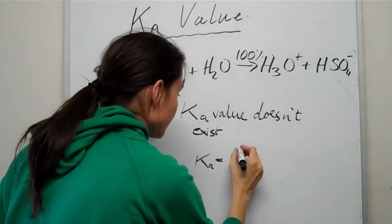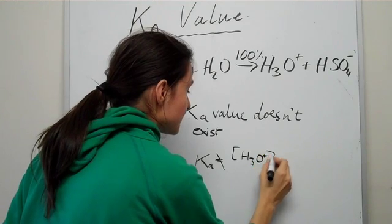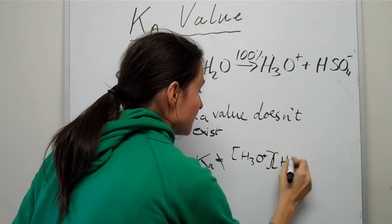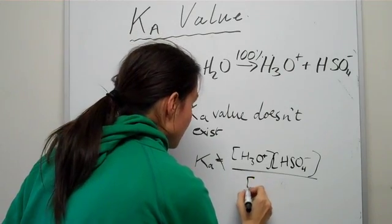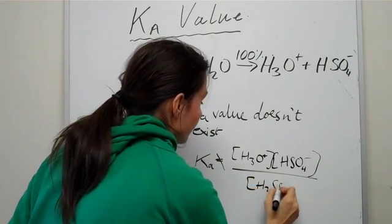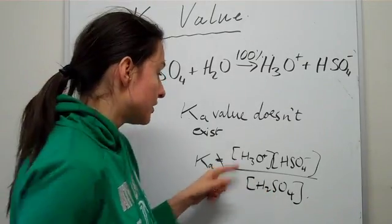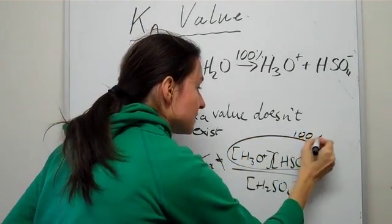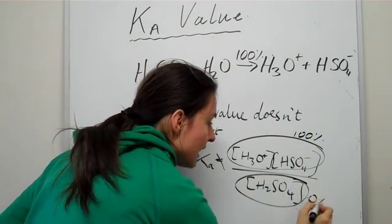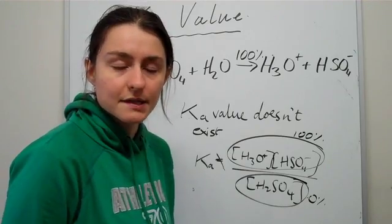So the Ka value does not equal H3O plus times by HSO4 minus divided by H2SO4. Basically because this will be 100% created and you will have zero of this. When you have some number divided by zero, it's undefined. So you can't actually define the Ka value—it does not exist.